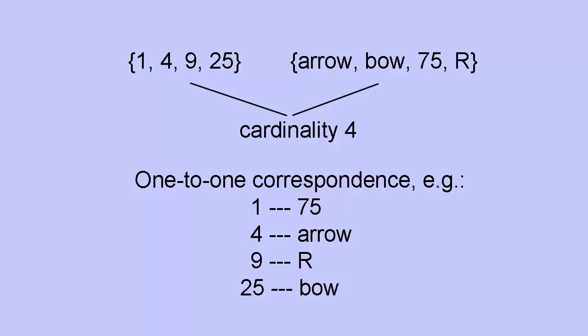The size of a set, how many elements it contains, is known as its cardinality, and is given by a cardinal number. Both the sets just mentioned have four members, or elements, and so have a cardinality of four. In general, if the cardinality of two sets is the same, then every member in the first set can be paired off with one in the second, so that nothing is left over. In other words, they have a one-to-one correspondence. For example, we can pair one with seventy-five, four with arrow, nine with R, and twenty-five with bow, to show that these sets have the same cardinality.